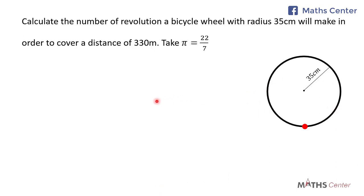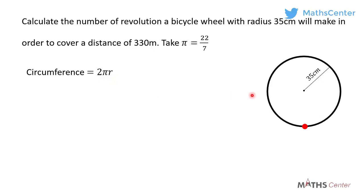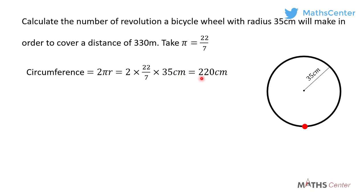The circumference of a circle can be found using the formula 2πr, where r is the radius. Using this formula we can get the total distance covered by the wheel in one revolution. With radius 35 centimeters and pi as 22/7, the circumference equals 2 × (22/7) × 35 centimeters, which equals 220 centimeters.